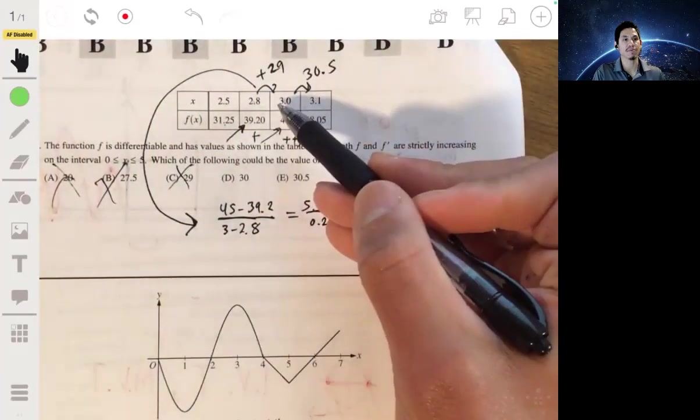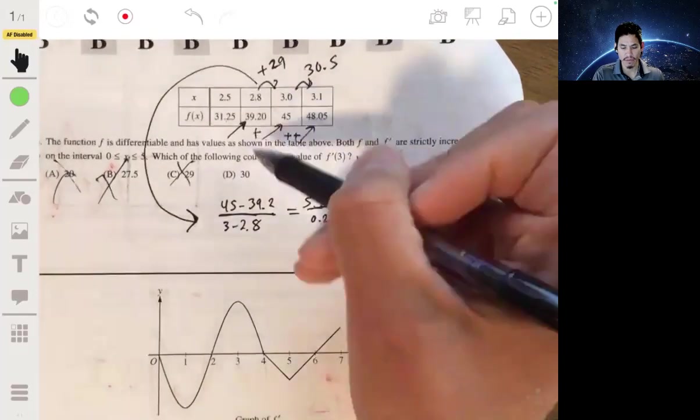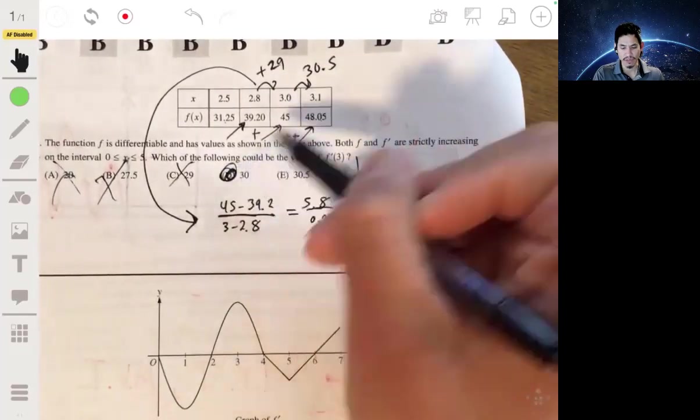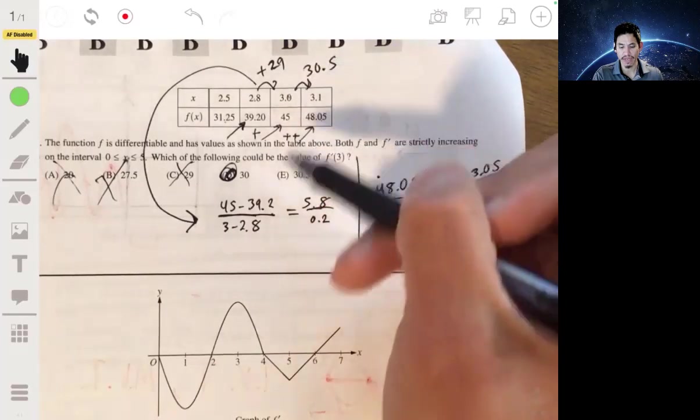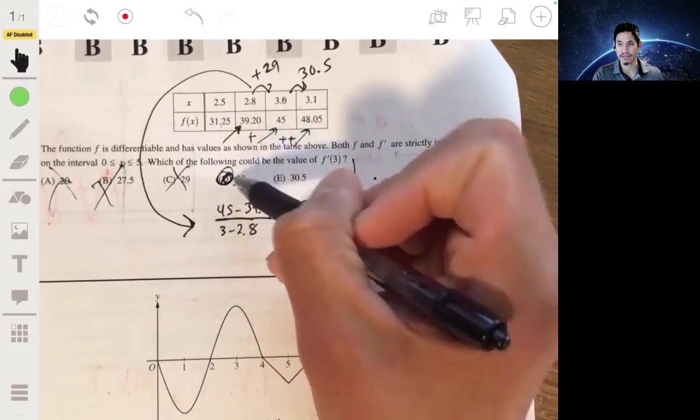At 3, the slope has to be between 29 and 30.5. The only number that makes sense is 30. So the answer is D.